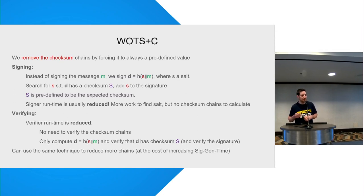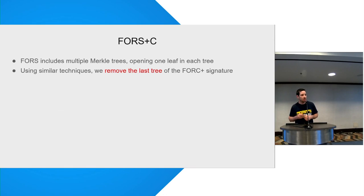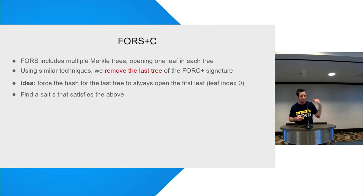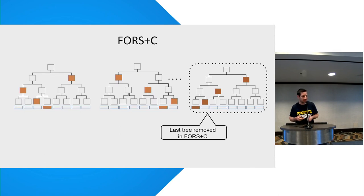And we can do it, we can also zero more chains. This is very nice. So basically we reduce chains. We also have FORS, which is basically a lot of Merkle trees. We're not going to details, but we do the same thing. We're going to just force one of the leaves that we find to be zero. And again, everything is actually faster, both for the verifier and for the signer.